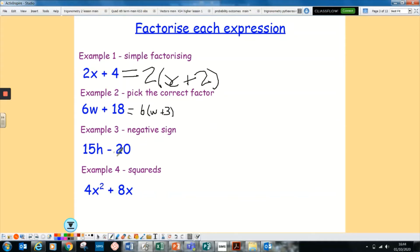The next one, again it just includes a negative sign. So you do exactly the same. Think about what's the biggest thing that goes into 15h and minus 20. Well, the biggest thing that goes into both is 5. And then you go, how do you go from 5 to 15h? Well, 5 times 3 is your 15. Don't forget your h. And how do you go from 5 to a negative 20? It will be a minus 4.